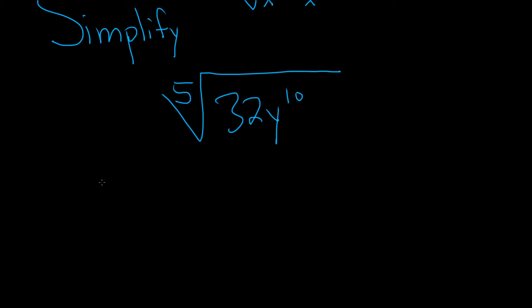Okay, so we want to write everything to the fifth power. So we have the fifth root of - for the 32, we can use 2. It turns out 2 to the fifth is actually equal to 32.